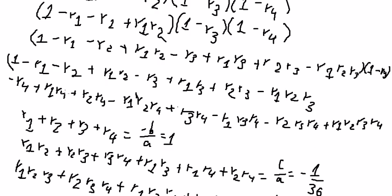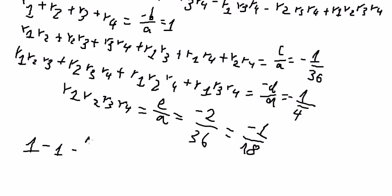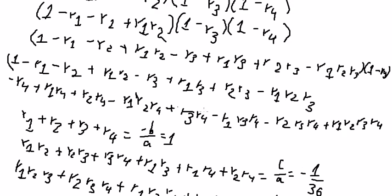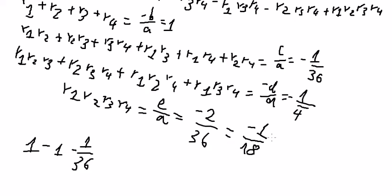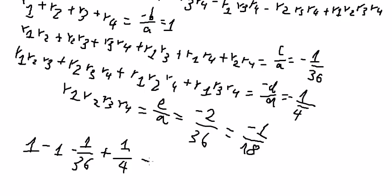The pairs are in the positive, so you got negative 1 over 36. The next one is in the negative side, so you got positive 1 over 4. And the last one is in the positive, so you got negative 1 over 18. So the final answer is about 1 over 6.